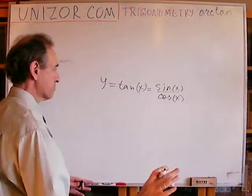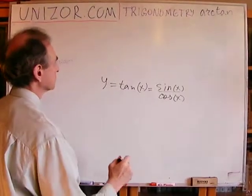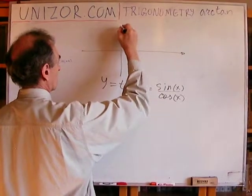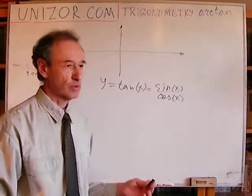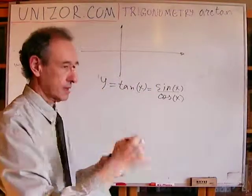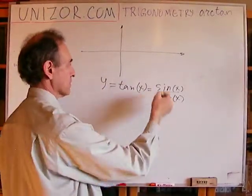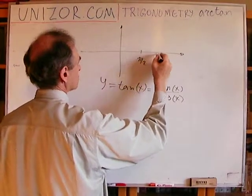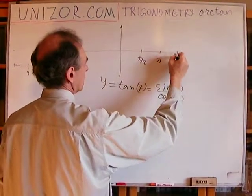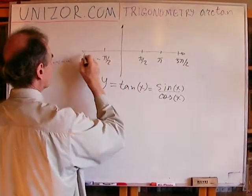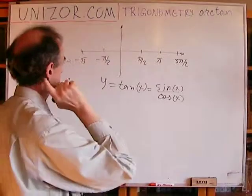Now let's build the graph. If this is π/2, this is π, this is 3π/2, this is -π/2, this is -π, etc.